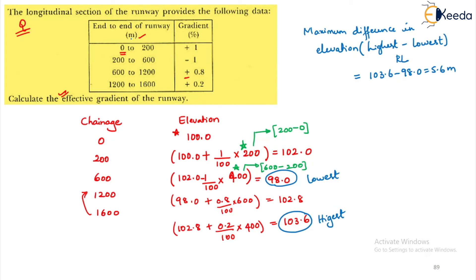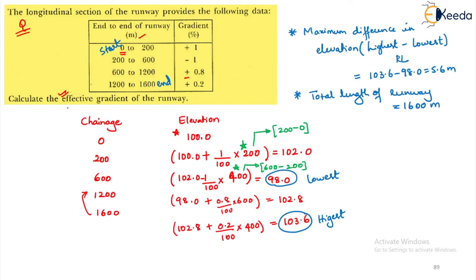The total runway length is from start to end, which is 1600 meters. The effective gradient equals the difference in the highest and lowest elevation — 5.6 meters — divided by the total runway length of 1600, multiplied by 100. This gives a value of 0.35 percent.